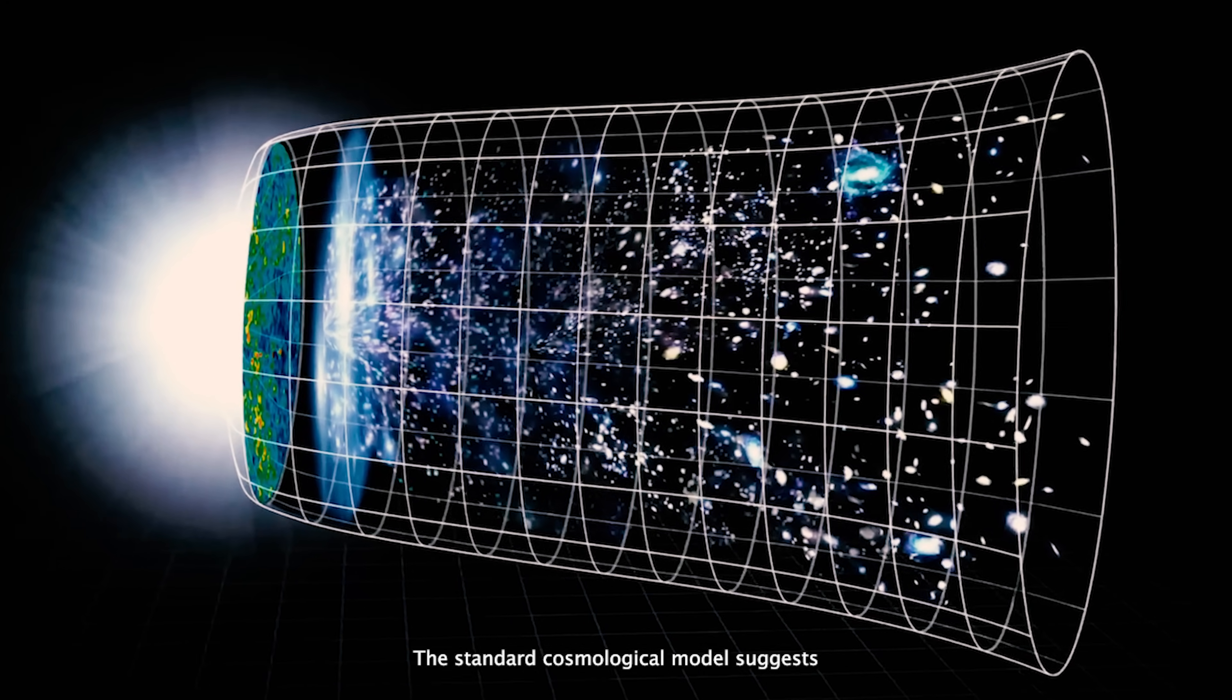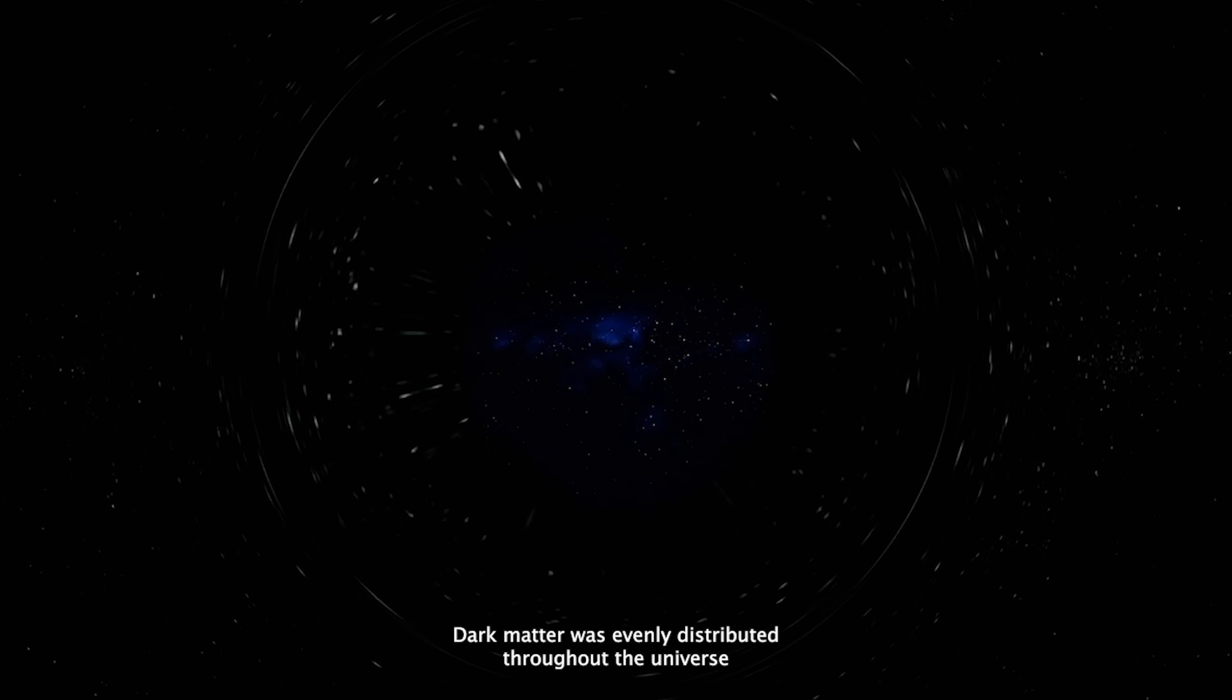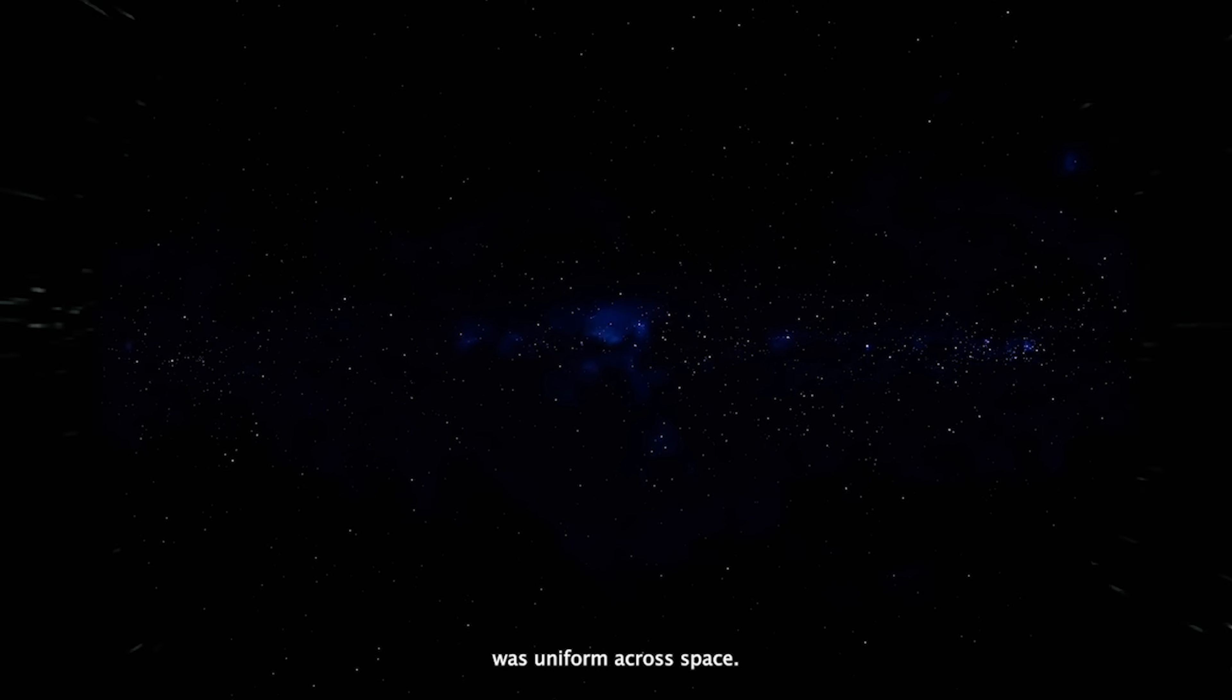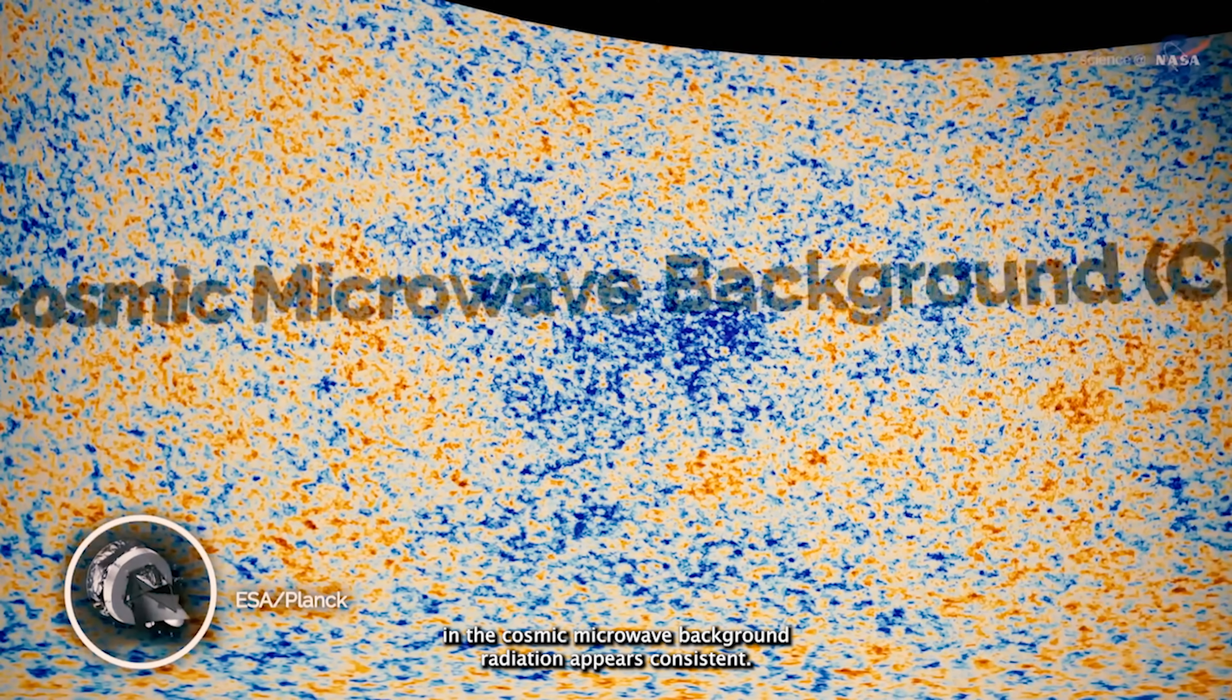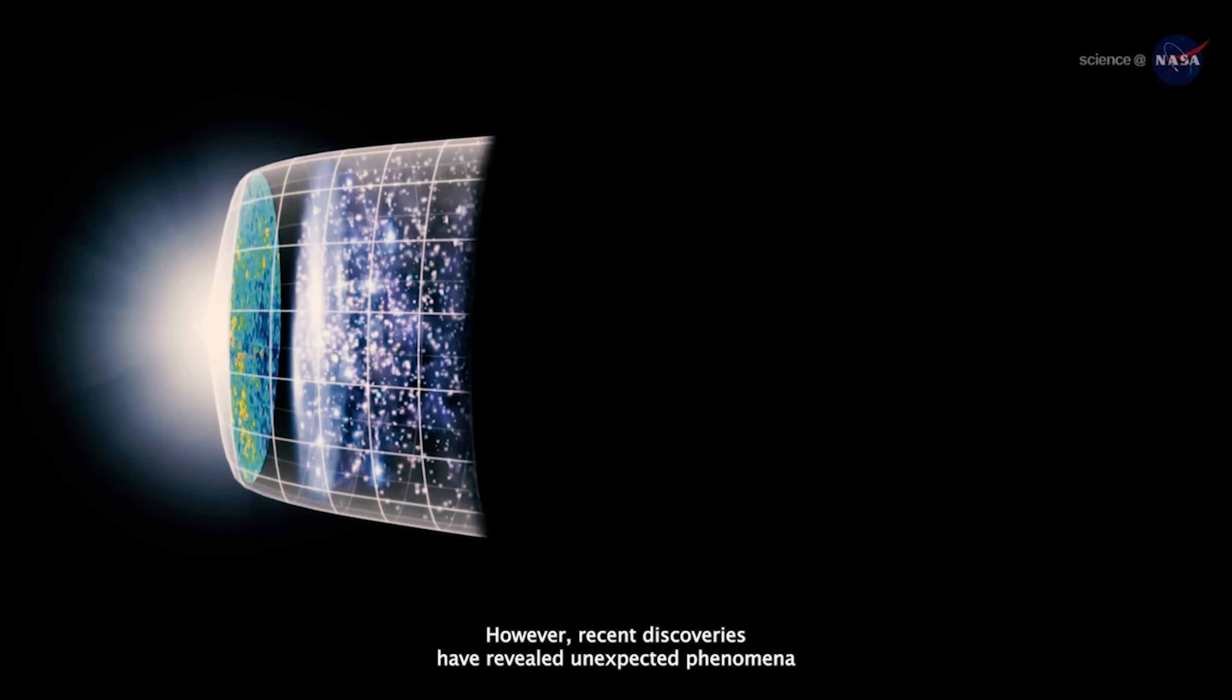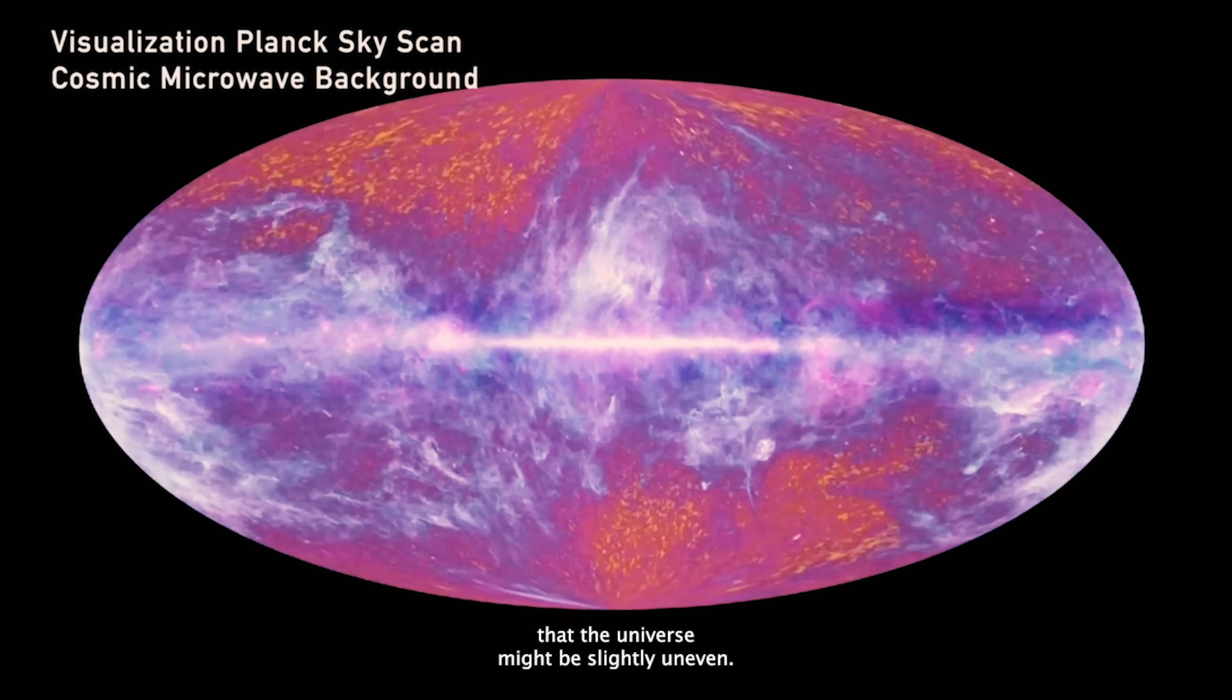The standard cosmological model suggests that dark matter played a crucial role in the formation of the first stars and galaxies following the Big Bang. According to this model, dark matter was evenly distributed throughout the universe after the Big Bang, meaning its density was uniform across space. This assumption has been fundamental in our understanding of the universe. This uniformity explains why the distribution of matter in the cosmic microwave background radiation appears consistent. However, recent discoveries have revealed unexpected phenomena that challenge the idea of a perfectly symmetrical universe.